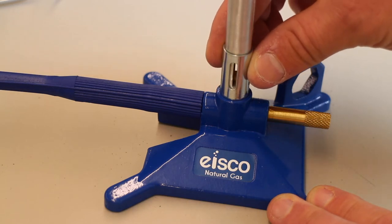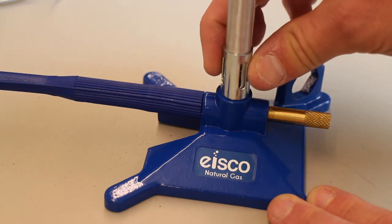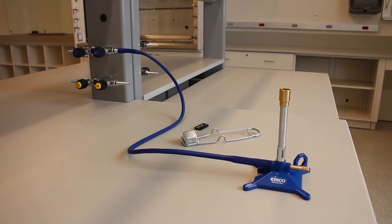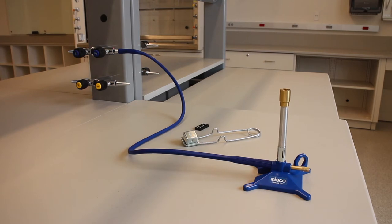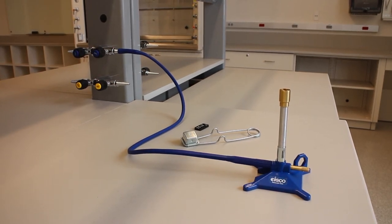The air available for combustion is controlled by turning this cylindrical piece at the bottom of the base of your burner. Control of the air and gas flow allows you to tailor the Bunsen burner's flame to suit your particular application.